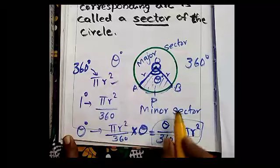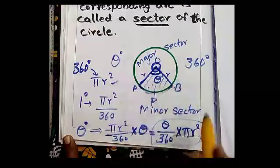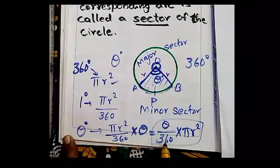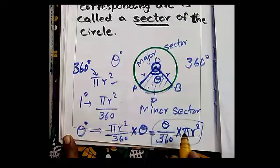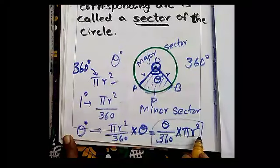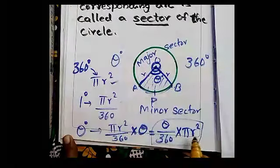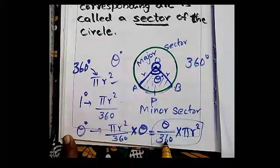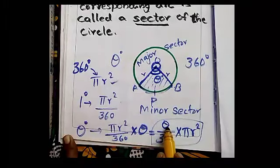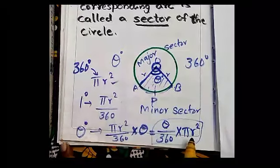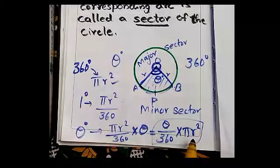Theta is the central angle. So theta out of 360 — θ/360 × πR². The area of the full circle is πR², and we are selecting a part only which makes an angle of theta degrees at the center. So the area of the sector is θ/360 × πR².